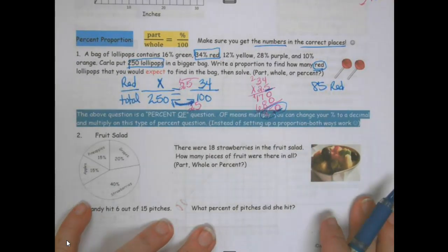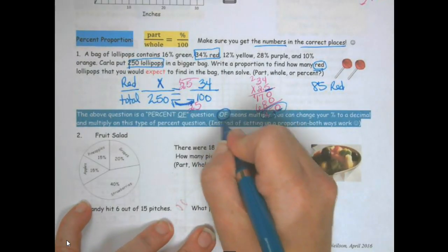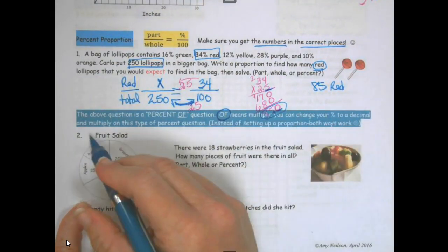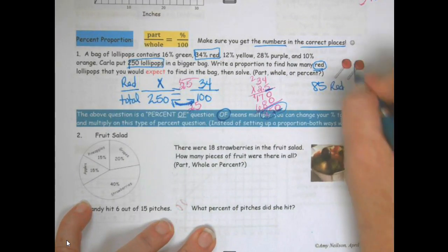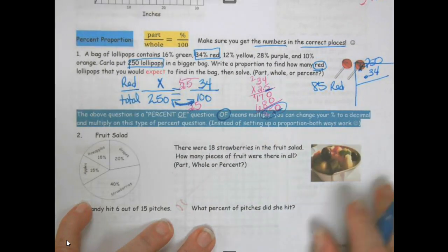The question above is also a percent of question. Remember of means multiplying. So you change your percent to a decimal and multiply. For example you could have done 0.34 times 250 and you would have gotten the same answer.